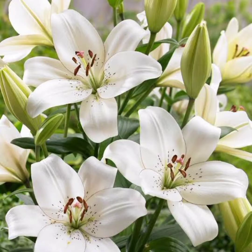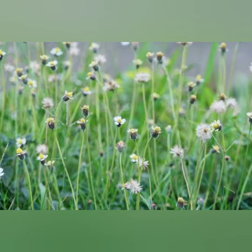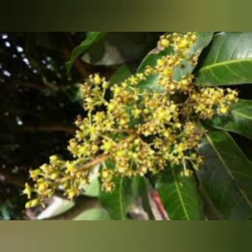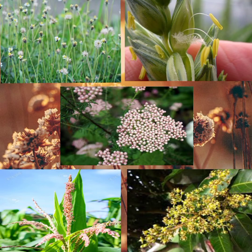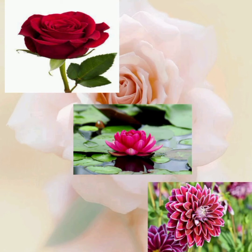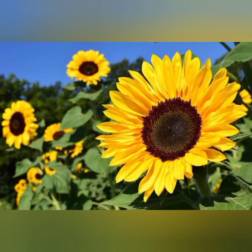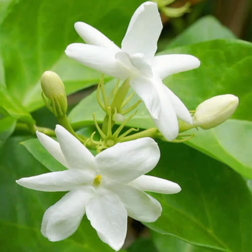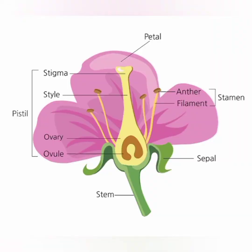In some flowers, like lily, sepals and petals look alike. In grass, wheat, rice, maize and mango, flowers are not prominent or brightly colored. But flowers of rose, lotus and dahlia are colorful and noticeable. Some flowers bloom in the daytime to attract insects, butterflies and bees, but some flowers bloom at night and are generally white in color.